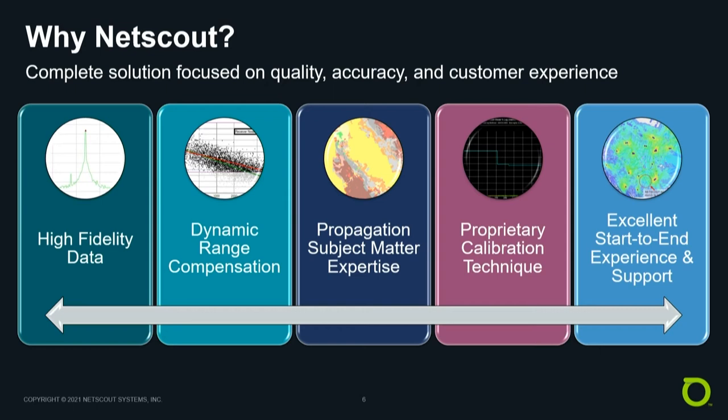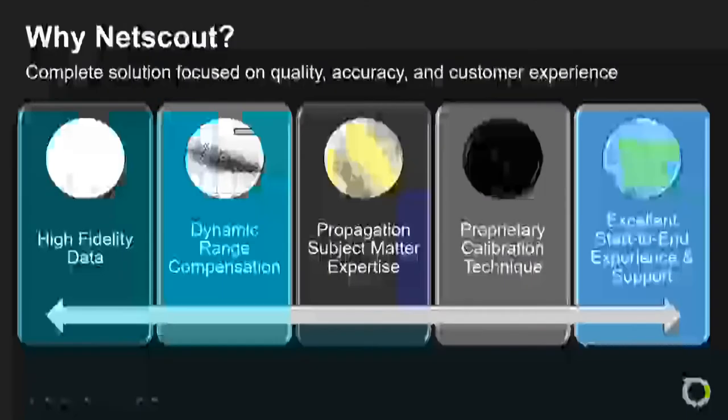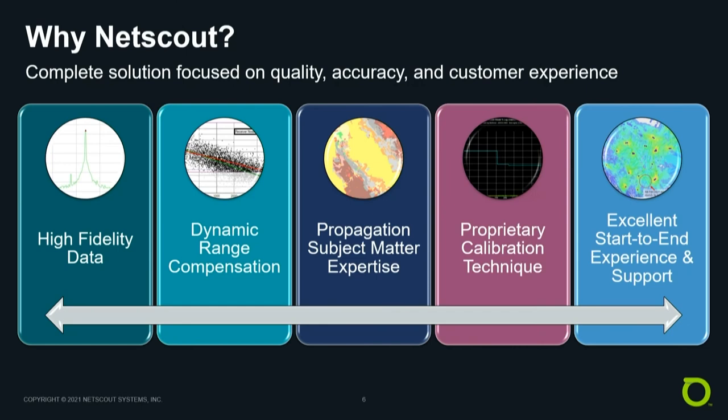Next, we utilize a patented technique called Dynamic Range Compensation, or DRC. We use this technique to overcome a data bias that exists with traditional calibration. The typical symptom of this bias is an overestimation of the cell edge. Models created with NetScout's DRC method mitigate this issue, and therefore result in more accurate predictions.